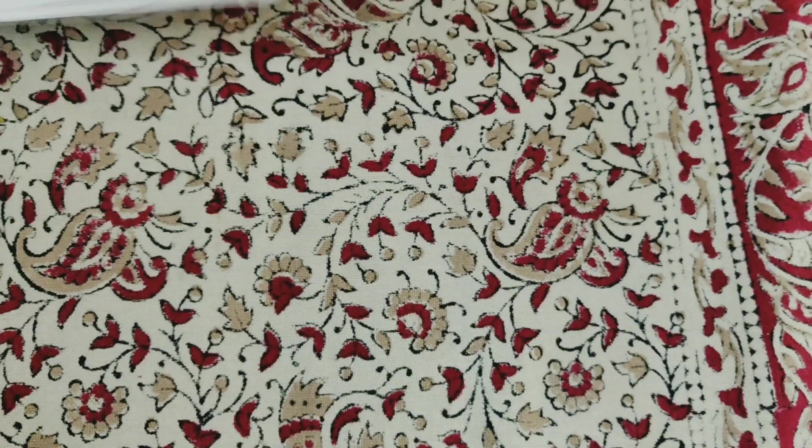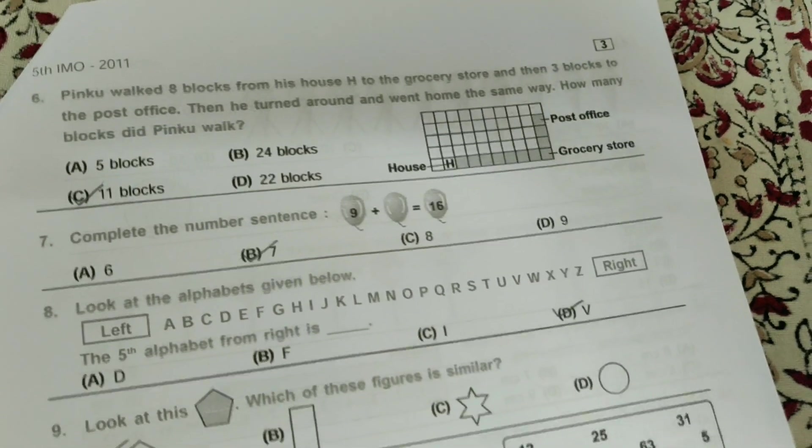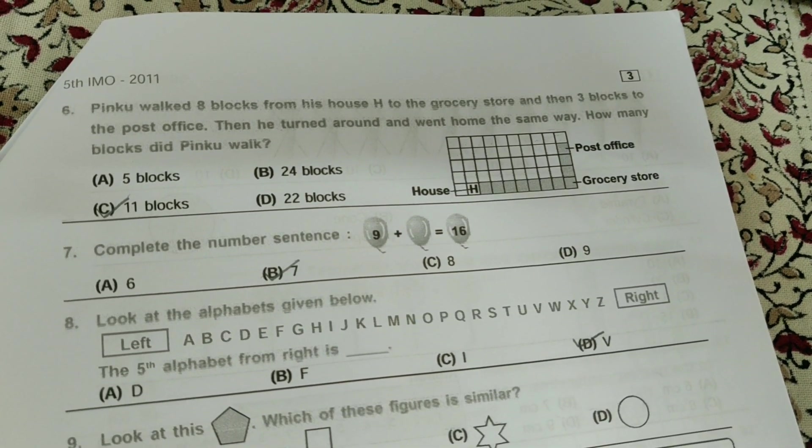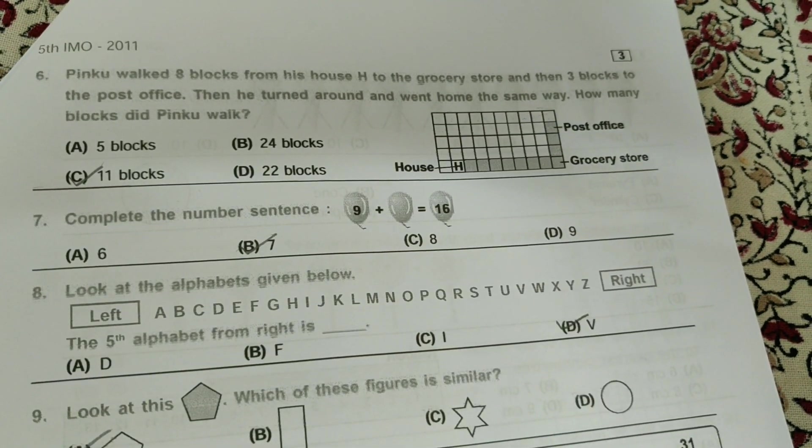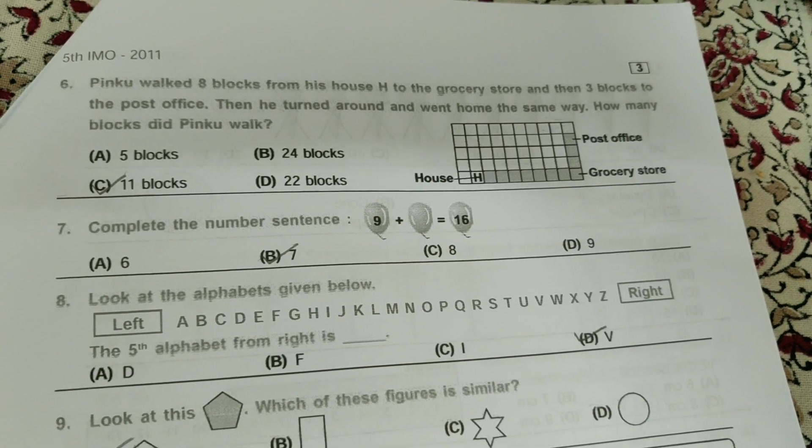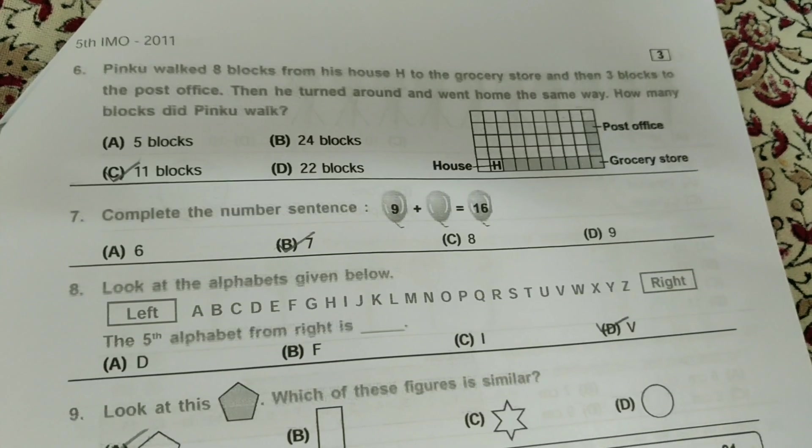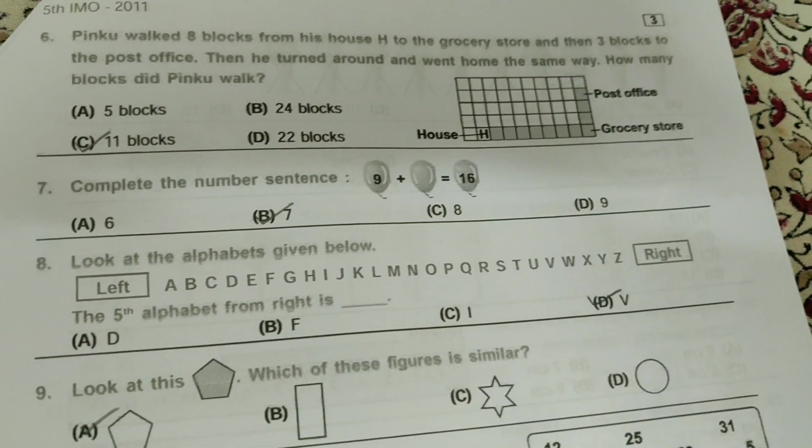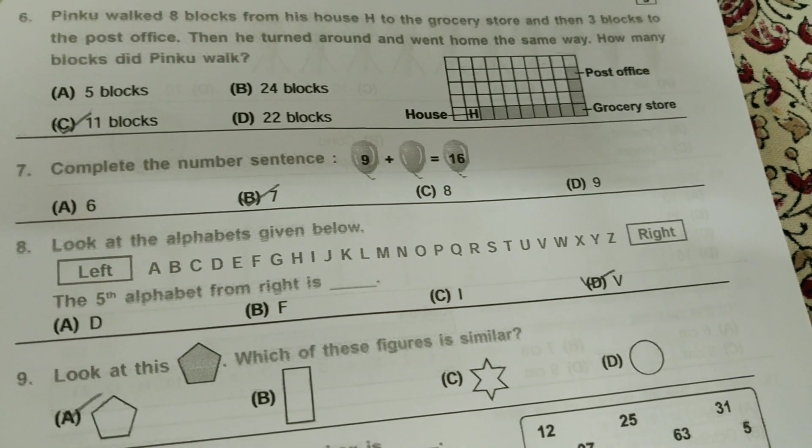Find the correct way to count by two. It's just count by two, guys. And it's very easy, too. Pinko walked eight blocks from his house to the grocery store and then three blocks to the post office. Then he turned around and went home the same way.